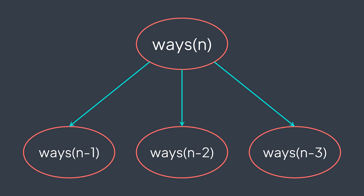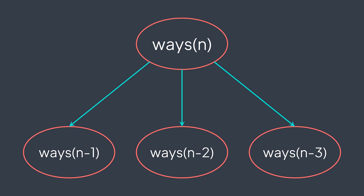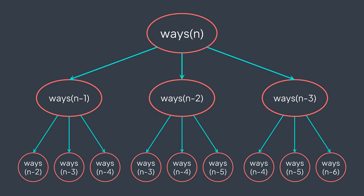We saw that to count ways of n, we need ways of n minus one, ways of n minus two, and ways of n minus three. But how do we calculate them? Same process: we calculate the sum of ways to reach the three previous steps. So ways of n minus one equals ways of n minus two plus ways of n minus three plus ways of n minus four. Ways of n minus two equals ways of n minus three plus ways of n minus four plus ways of n minus five. And ways of n minus three equals ways of n minus four plus ways of n minus five plus ways of n minus six.